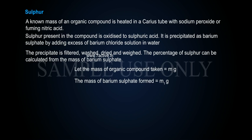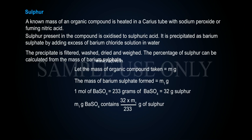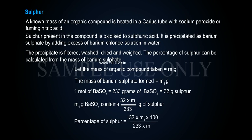Let the mass of organic compound taken equal m grams, and the mass of barium sulfate formed equal m1 grams. One mole of BaSO4 = 233 grams of BaSO4 = 32 grams of sulfur. Therefore, m1 grams of BaSO4 contains (32 × m1) / 233 grams of sulfur. Percentage of sulfur = (32 × m1 × 100) / (233 × m).